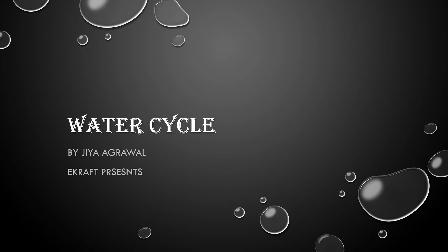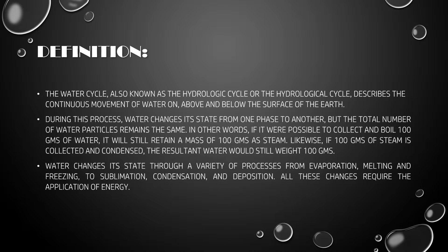Hello guys, welcome back to our channel eCraft Geeks. Today I am going to tell you about the process of the water cycle. The water cycle, also known as the hydrologic cycle or the hydrological cycle, describes the continuous movement of water on, above, and below the surface of the earth. During this process, water changes its state from one phase to another, but the total number of water particles remains the same.